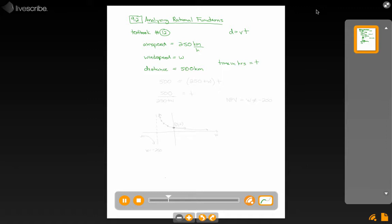In this case we've got this airplane that travels at an airspeed 250 kilometers per hour. The wind speed, which we call W, and then the distance, which is 500 kilometers from one town to the other.